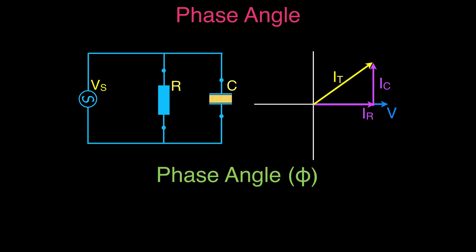We also want to find the phase angle — the angle by which the current leads the voltage, denoted phi. Since we know all three currents, we could use sine, cosine, or tangent, but generally people use tangent because you don't need the total current first. The phase angle equals the arc tangent of the capacitor current divided by the resistor current — tangent is opposite over adjacent (SOHCAHTOA).